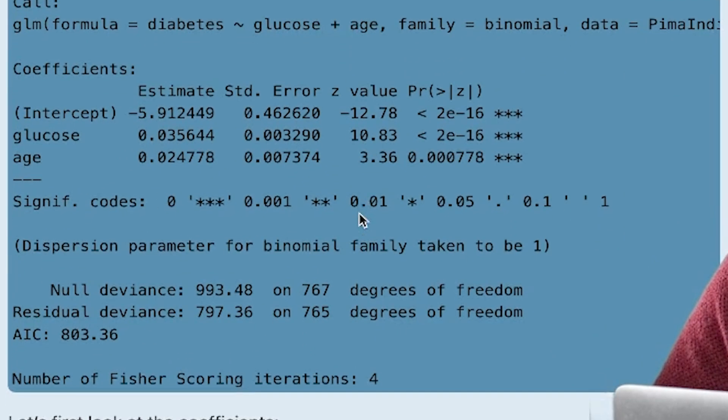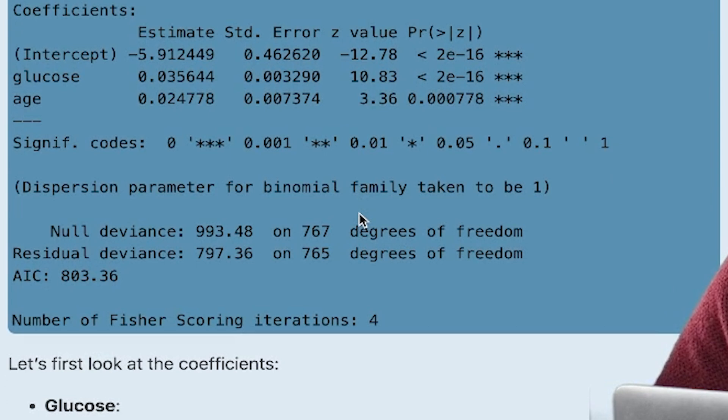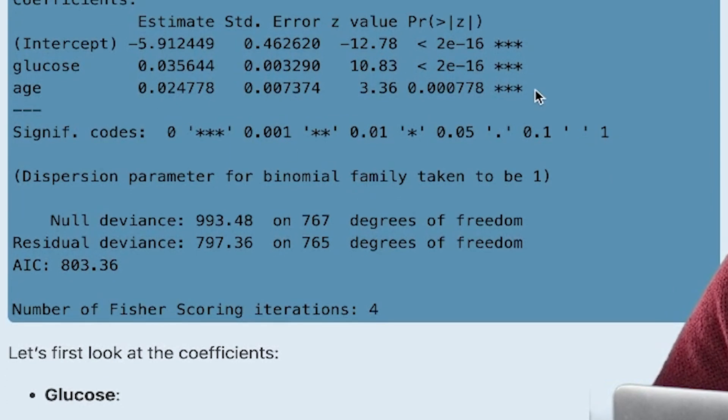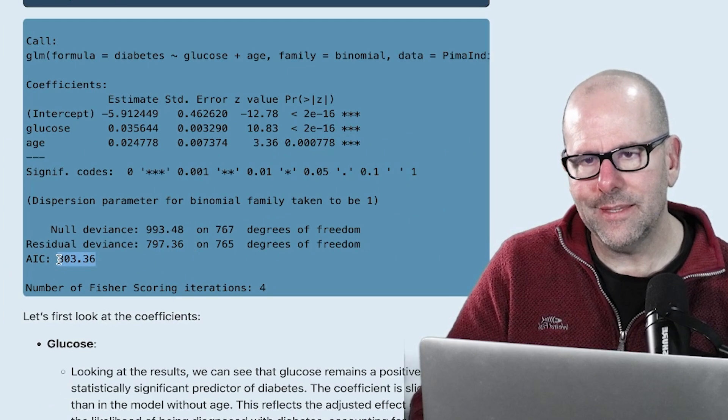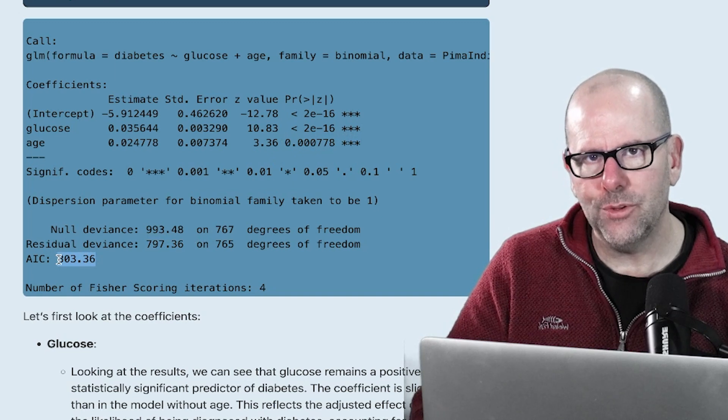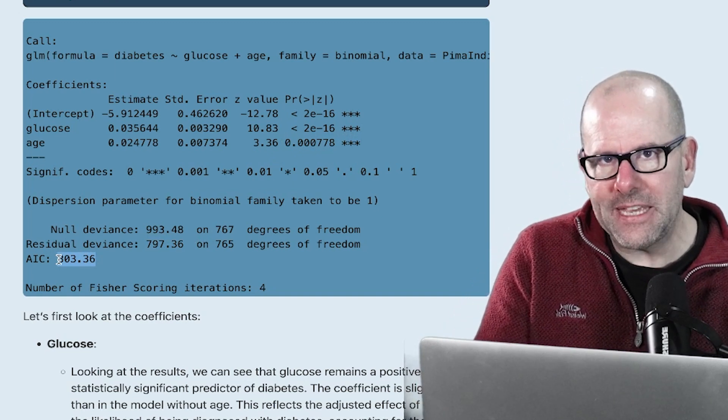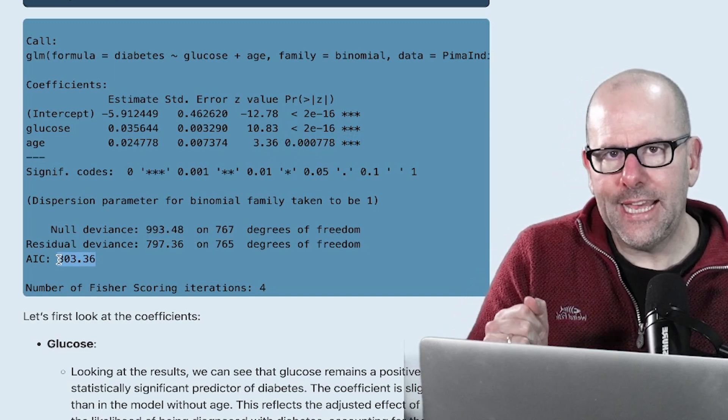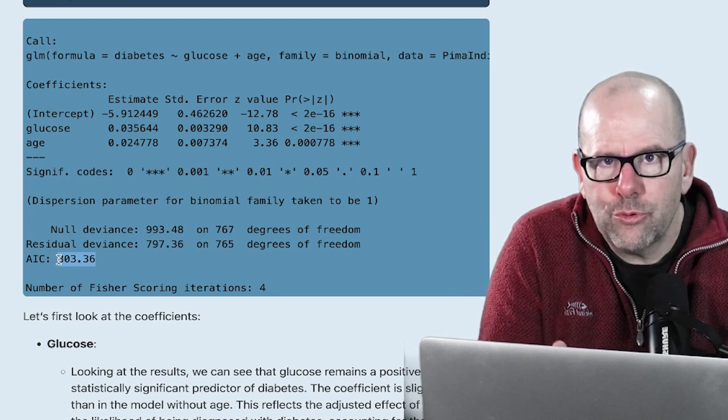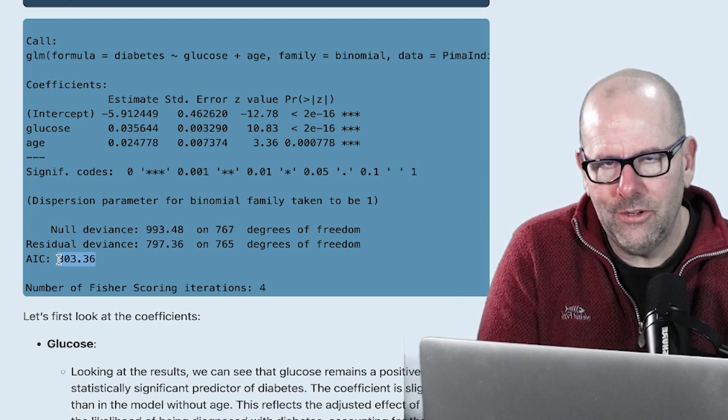And we took note of the fact that age was statistically significant, and that the residual deviance and the AIC both went down, all indicating that this is a good thing to add to the model at this stage, to the best of our knowledge. Adding age is a plus. The model has improved by adding this one variable. So that's interesting. So we can add in a variable.